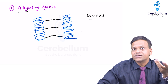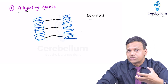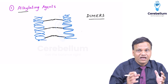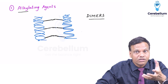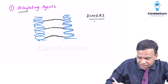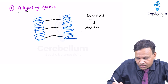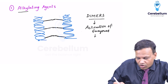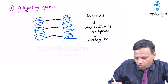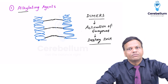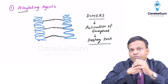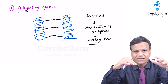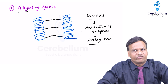Normally, dimers do not exist in the cell. So whenever dimers are produced, the enzymes present in the cell think that some defective DNA has come. When defective DNA comes, the cell enzymes will break it down. So dimerization results in activation of enzymes in the cell and they destroy the DNA. When the whole DNA is in dimerized form, the whole DNA will be destroyed and the cell will be killed.